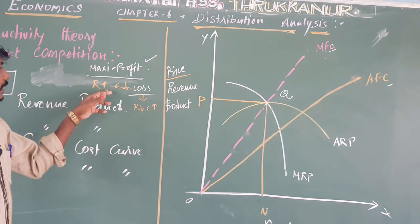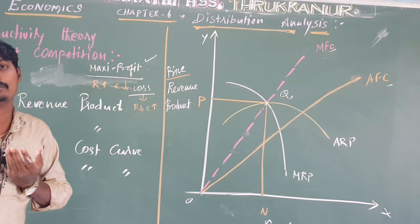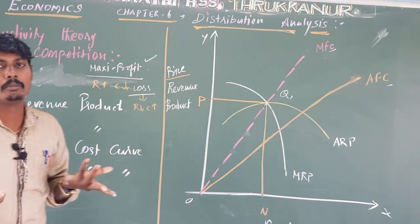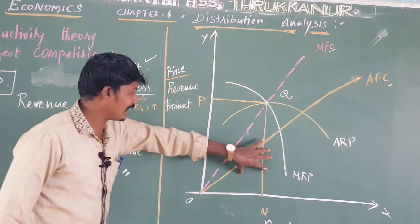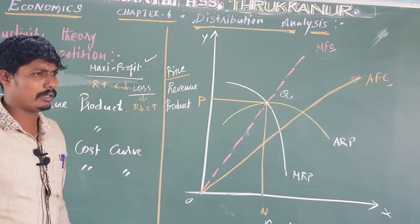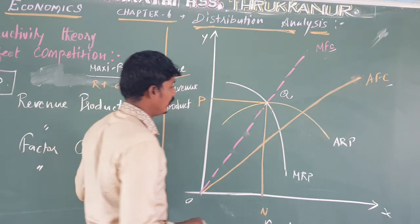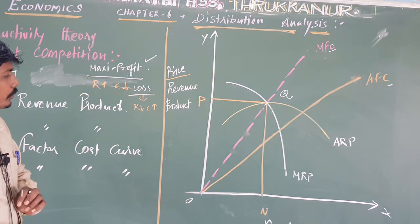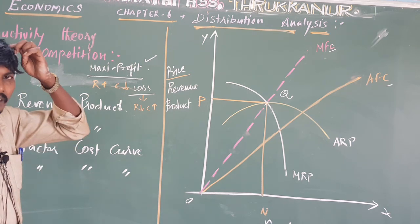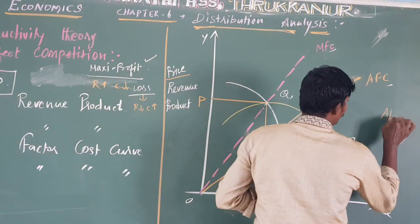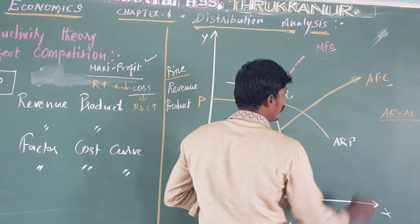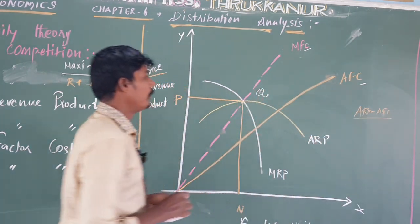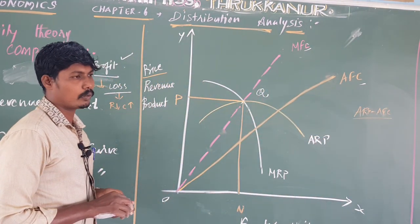If revenue is increasing and cost is lower, you can make a profit. To determine profit or loss, we look at average revenue (AR) and average cost (AC). If AR is greater than AC, there is profit. If AC is greater than AR, there is a loss. The difference between AR and AC tells us the amount of profit or loss.